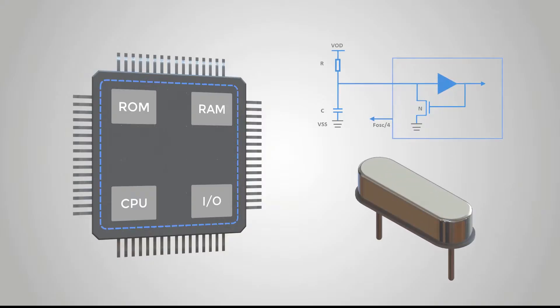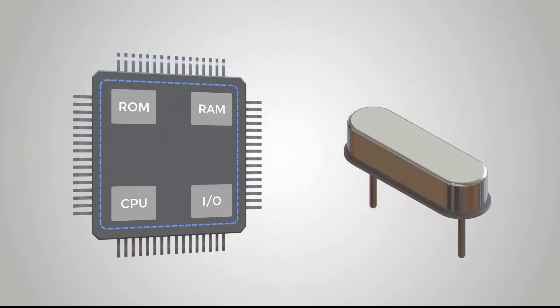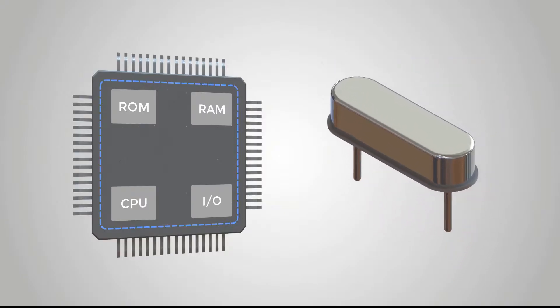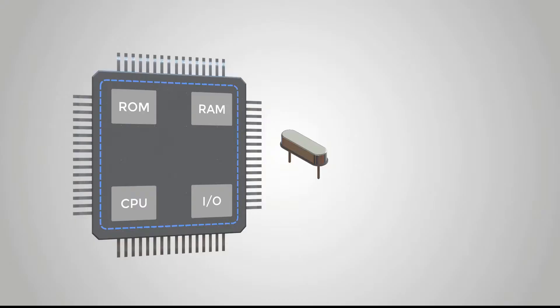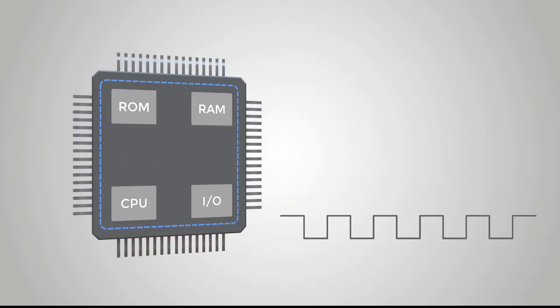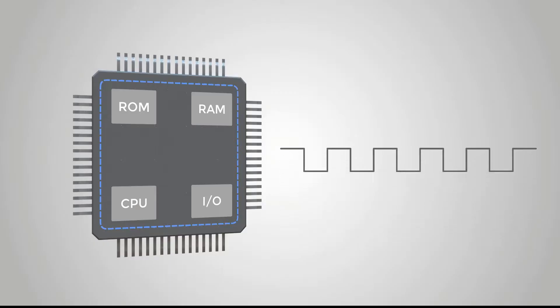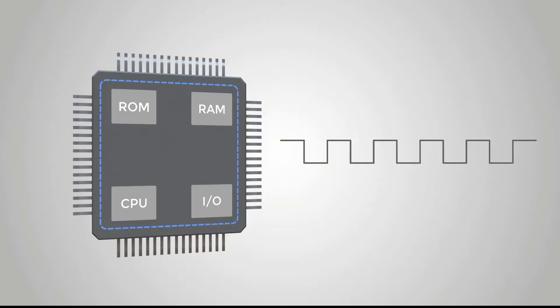Due to the relatively large error of the internal RC oscillator, an external crystal oscillator is generally used, incorporated with the crystal oscillator circuit, to generate a clock signal of a certain frequency after power on. Each component of the microcontroller must work in coordination according to the clock signal. The length of the clock cycle affects the speed of the microcontroller, so the crystal oscillation frequency is also called the main frequency of the microcontroller.